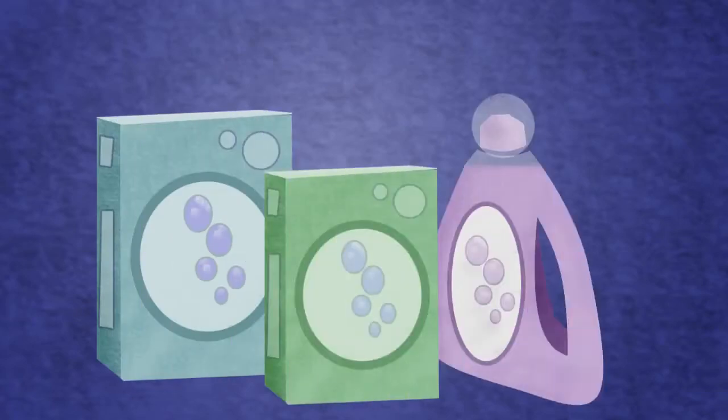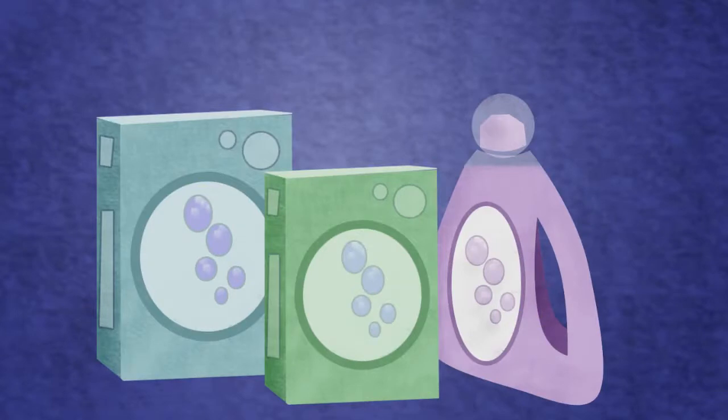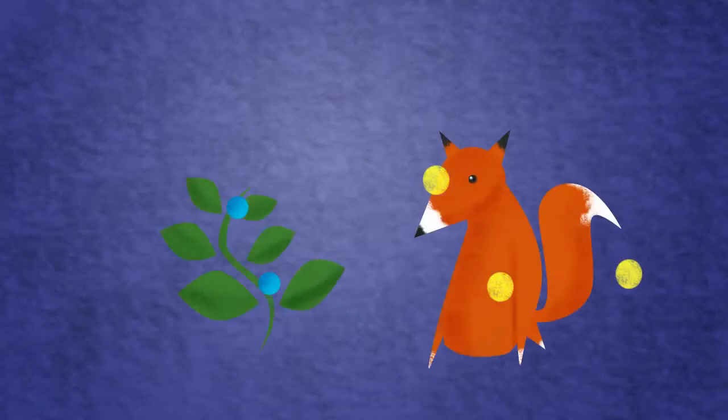Some washing powders contain proteases and lipases. These are known as biological detergents, as proteases and lipases come from living organisms.